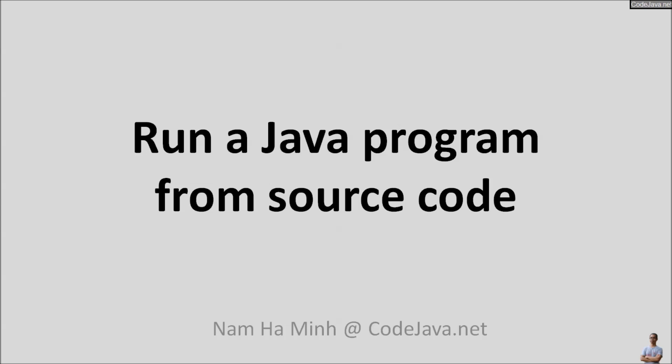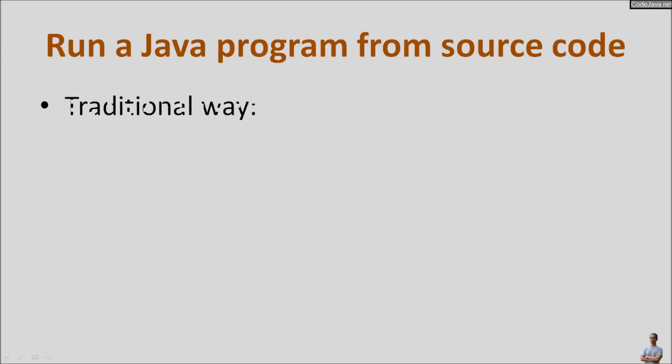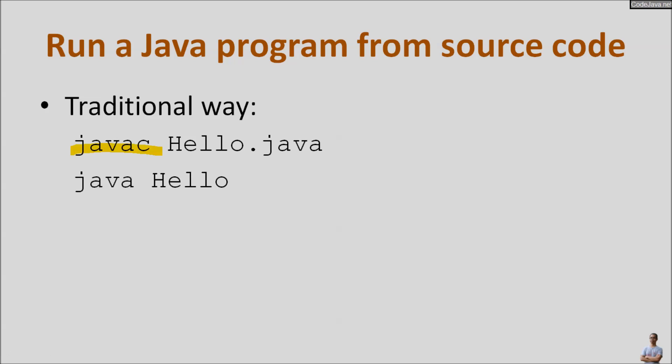Hello, in this video you will learn how to run a Java program directly from source code. I am Nam Amin from codejava.net. Perhaps you are very familiar with the traditional way to run a Java program, which has two steps: the first step is to compile the Java source file using the javac command, and the second step is to use the Java command to run the program.